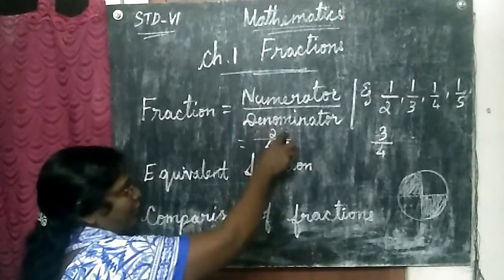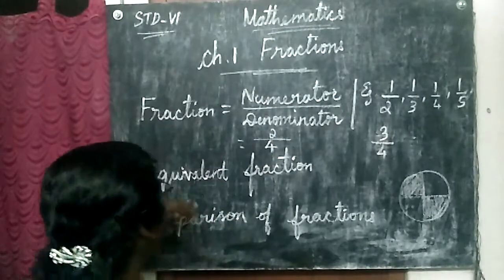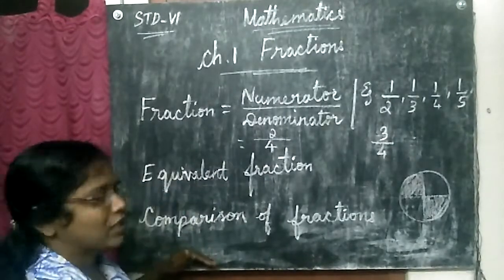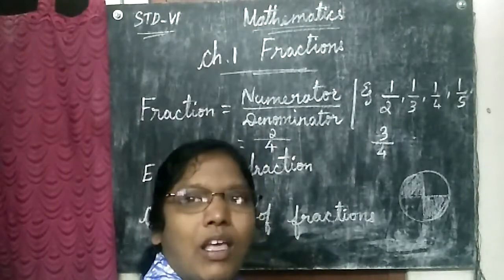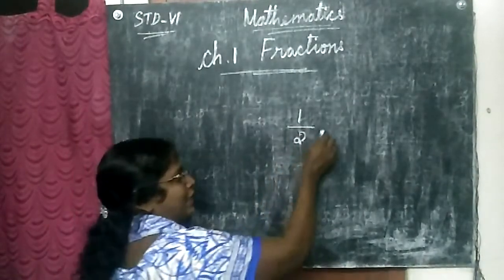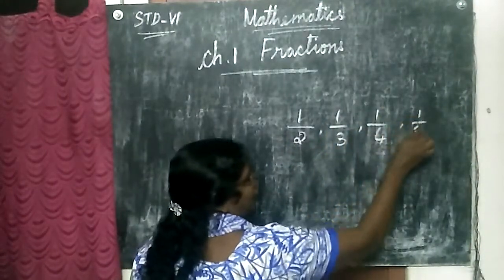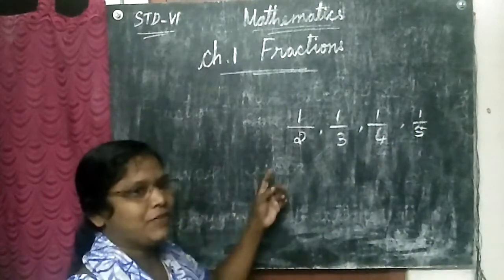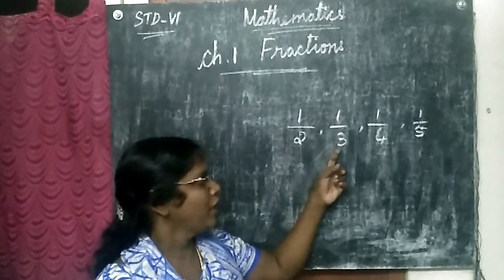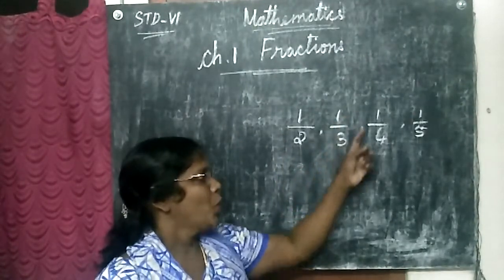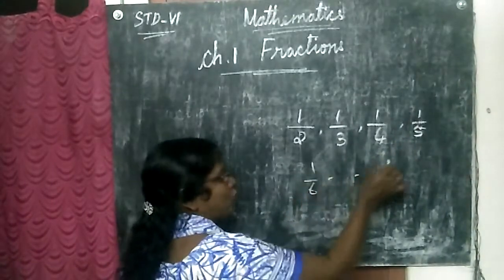Fraction means numerator by denominator. We are going to learn about equivalent fractions and comparison of fractions. First, how to read these fractions: this we say half, one third, one fourth, one fifth, one sixth — like this it goes on.